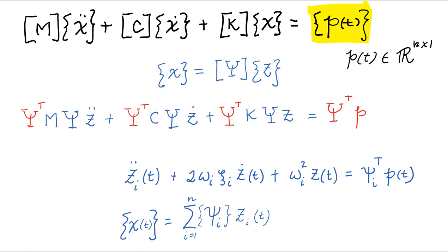To analyze this problem using modal analysis, we do our conventional modal coordinate transformation. We substitute in for x double dot, x dot and x. And then we pre-multiply by phi transpose all terms in the equation.